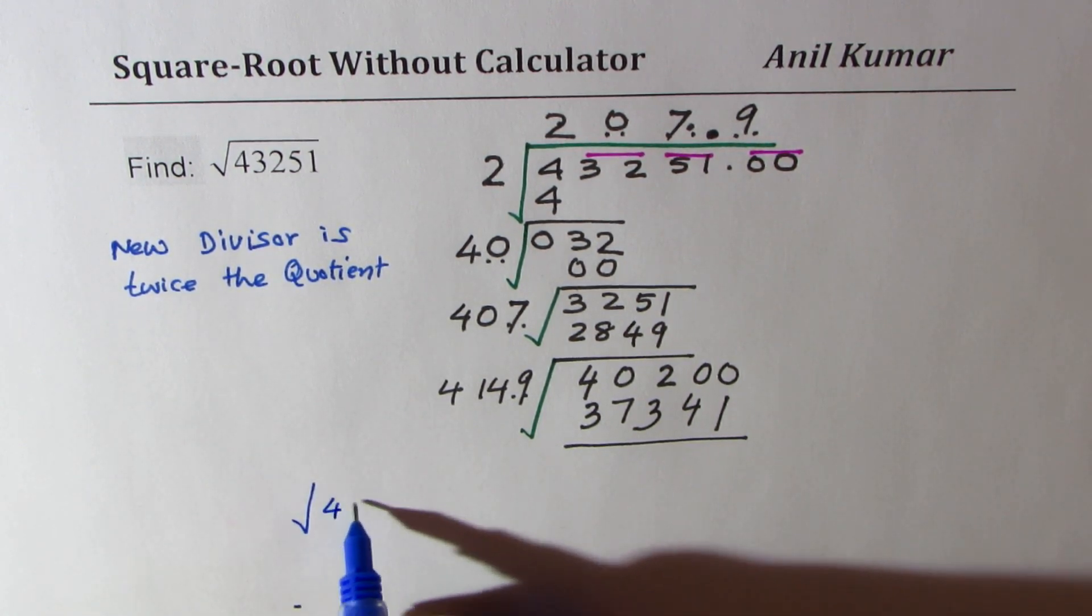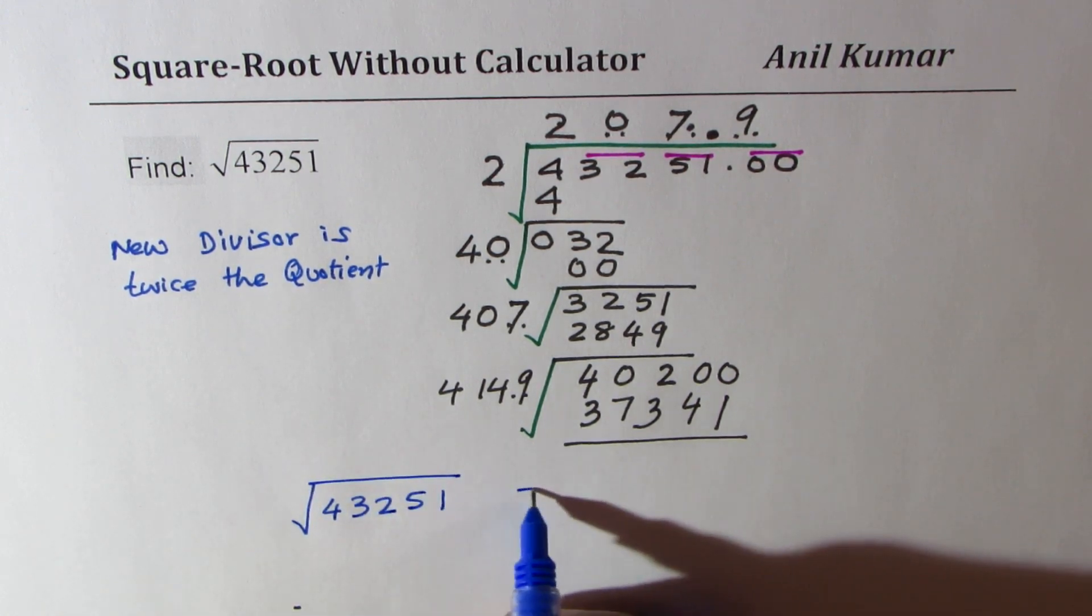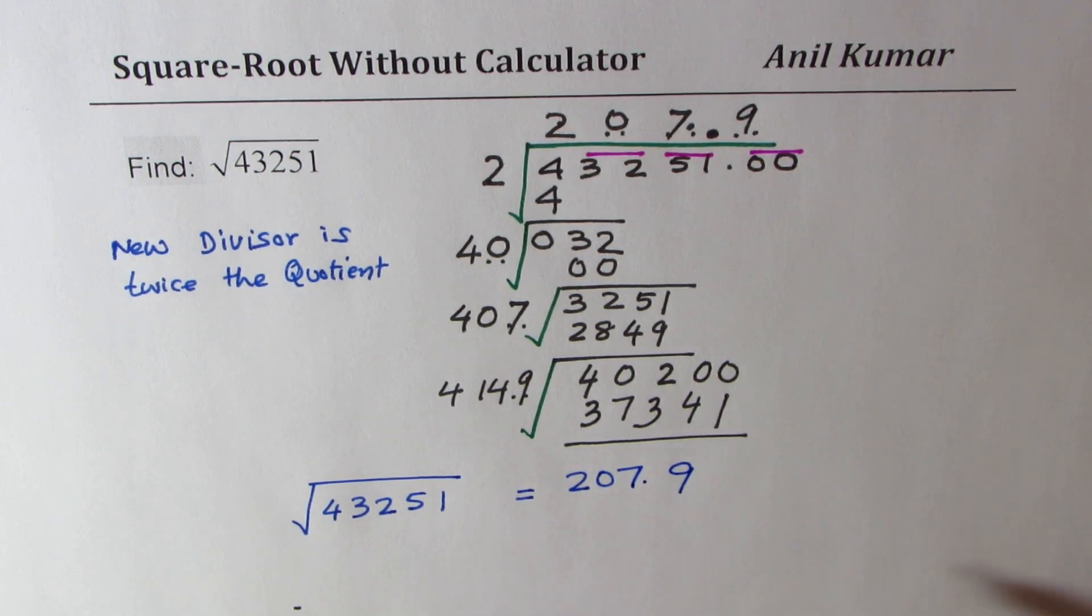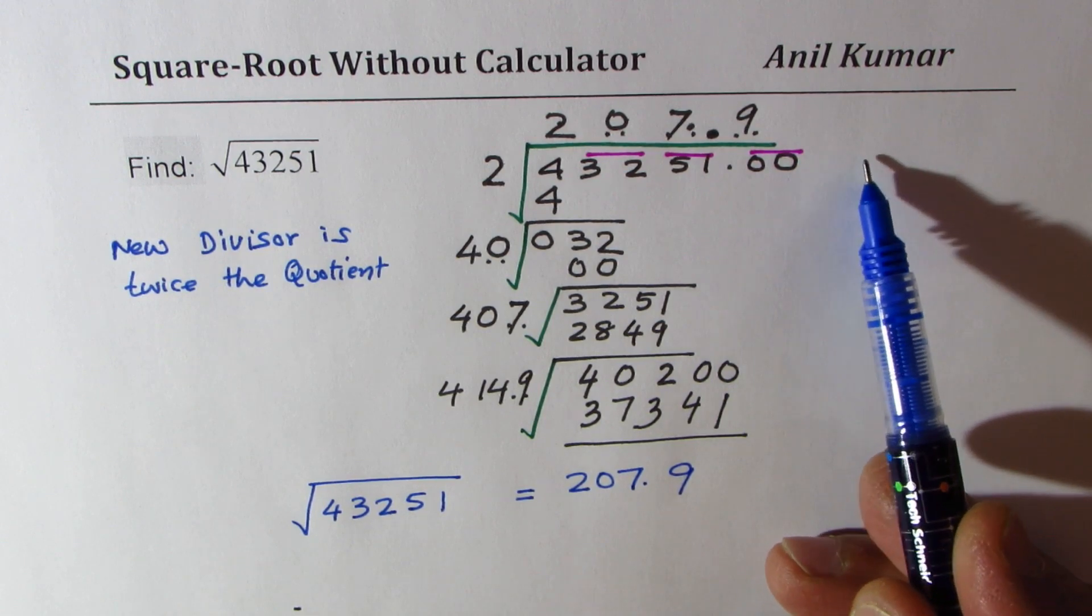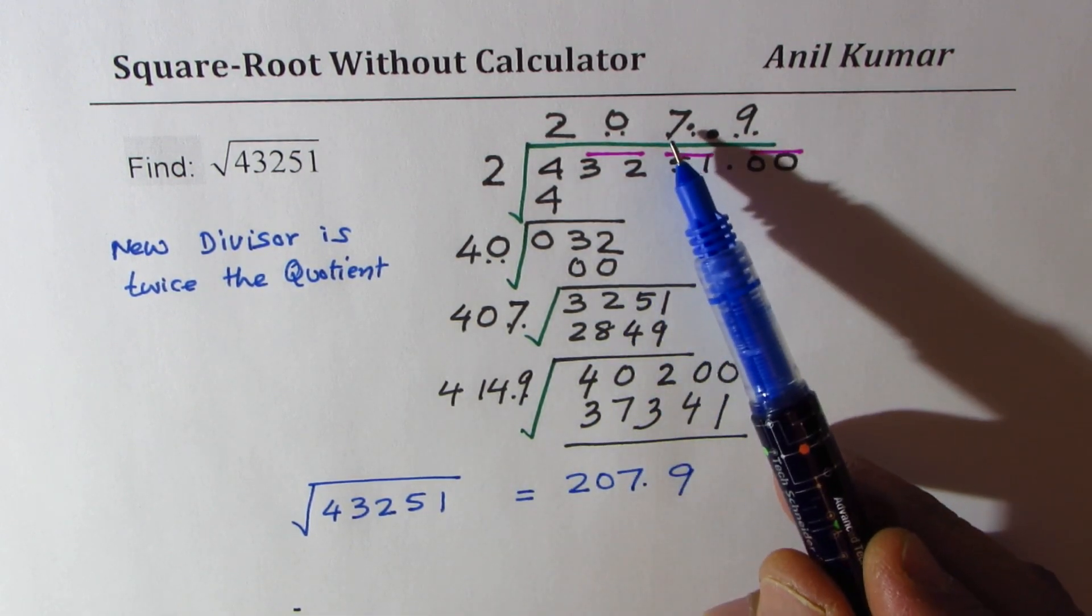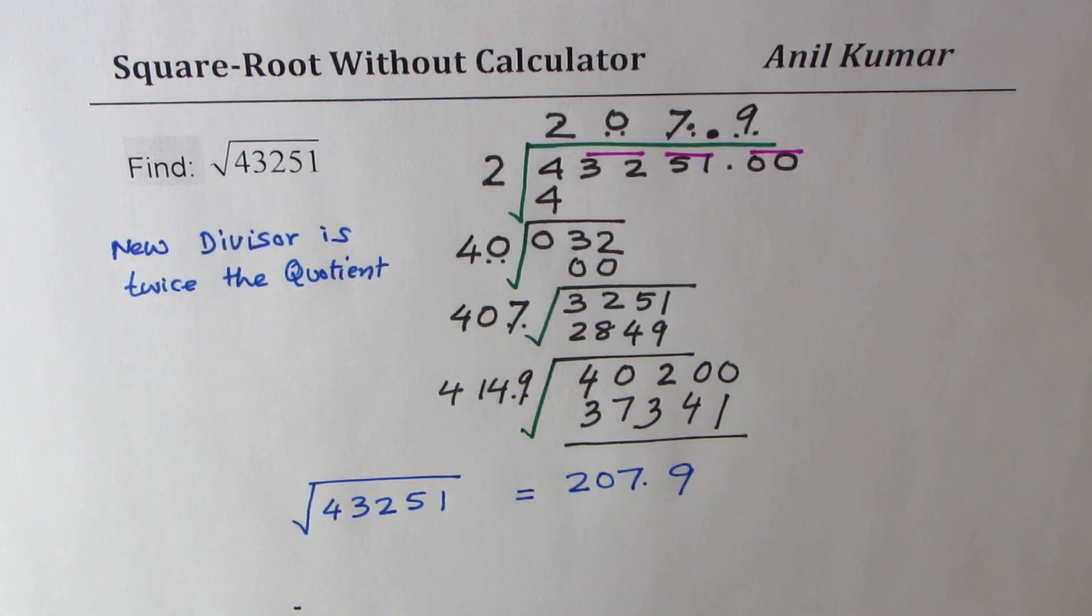You can always continue to the second decimal place by adding two zeros here and writing the divisor as twice the quotient, and that way you can go on and get a very accurate result by this special division process. I hope the steps are absolutely clear.